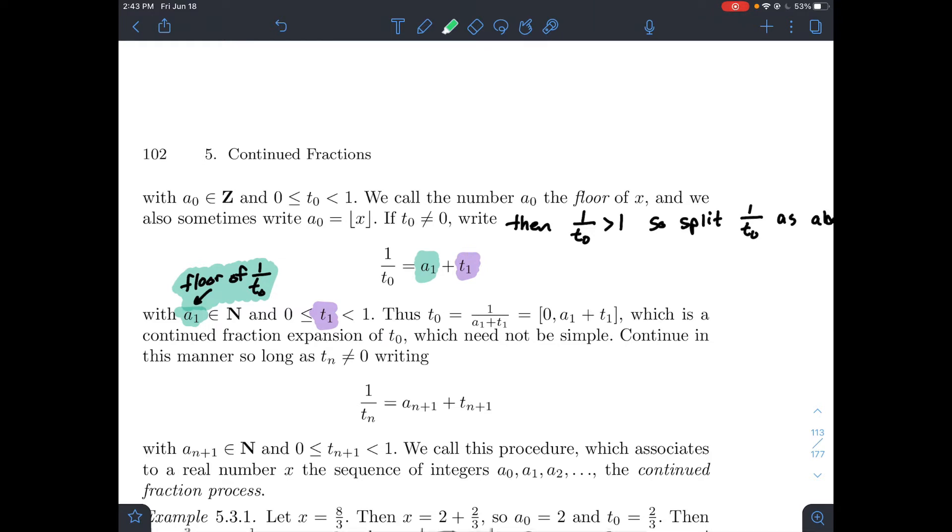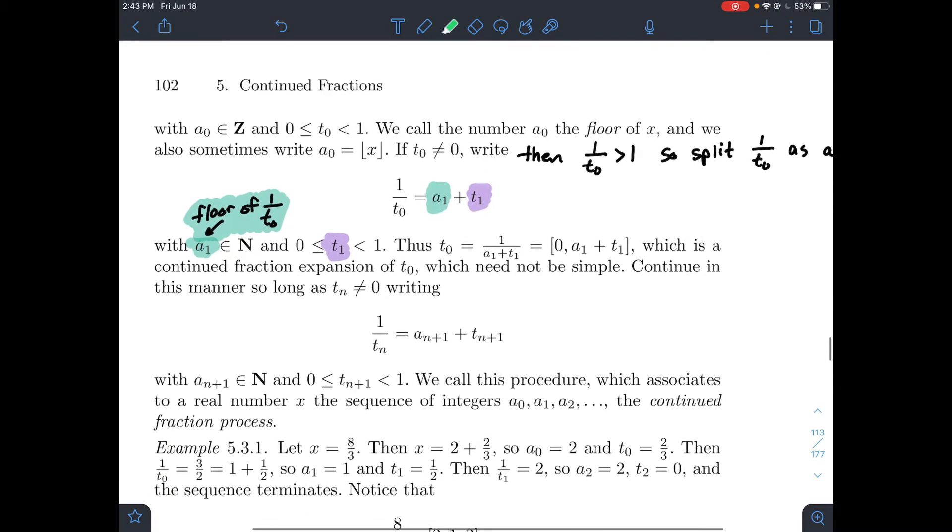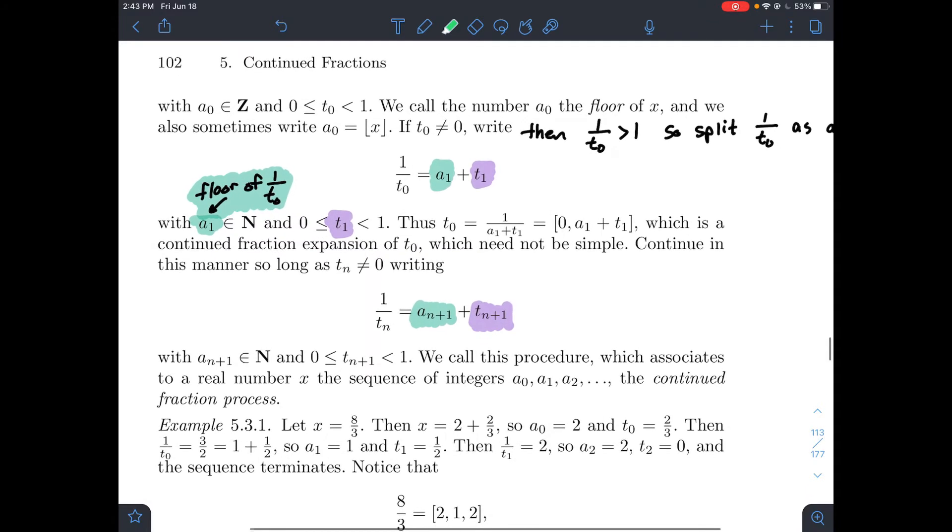And eventually, at some point, this process might stop, or it might keep going on forever. But I could always do this: tn is equal to an plus 1 plus tn plus 1, where an plus 1 is the floor of 1 over tn, and tn plus 1 is a real number between 0 and 1. And what we do is we take those integers, a0, a1, etc., and use those to get the continued fraction representation.